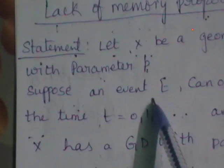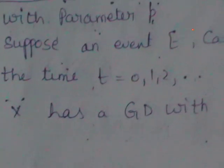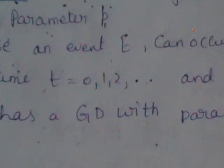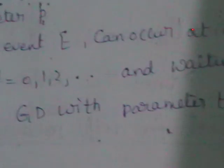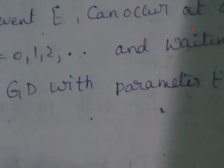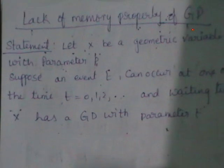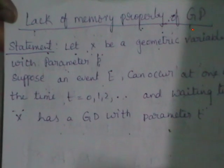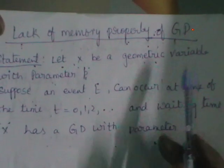Here we are going to discuss about the waiting time. As you know, geometric distribution indicates the number of failures before reaching the first success. Before reaching the first success, the number of failures that occurred — if you take that as a variable — is going to represent the geometric variable here.